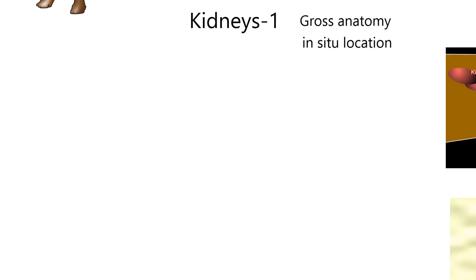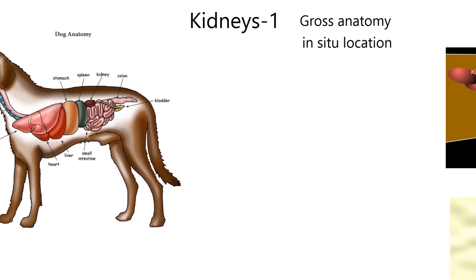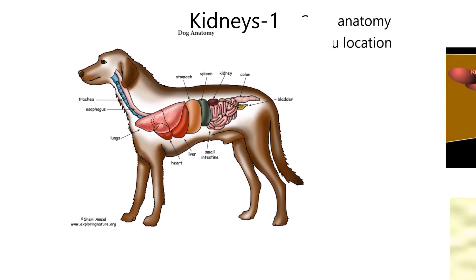I'm going to do the in situ location first. In situ means as it occurs in the living animal. Here's a nice diagram of a dog. You could pause it and look at all the internal anatomy. The one thing it doesn't show is the diaphragm that would separate the thoracic cavity from the abdominal cavity.